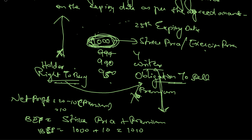If the spot price is 1001, the holder will still execute the contract since he gets a gross profit of 1, but after the 10 rupee premium, he incurs a net loss of 9. So 1010 is the break-even point — beyond 1010 the holder earns net profit, and between 1000 and 1010 his losses are reducing.